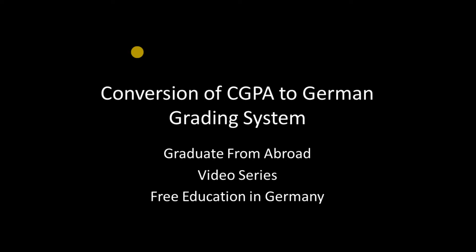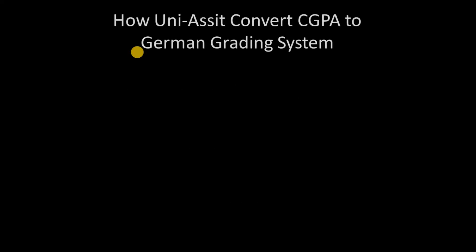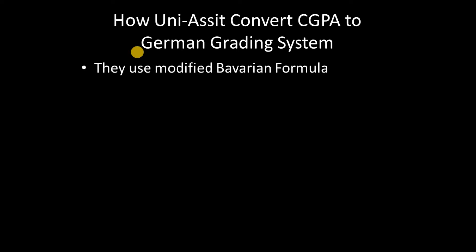The basic motivation behind this video is to provide you a tool which is used by uni-assist. I hope you all know what uni-assist is — if you are applying to a German university you should know. They use a simple formula known as the modified Bavarian formula to convert the CGPA of different countries into the German grading system.